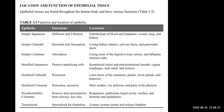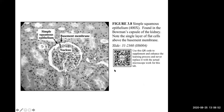Pseudo-stratified columnar — think respiratory tract: nasal cavity, trachea, anytime air comes into contact with parts of your respiratory tract. Transitional is a specialized type for distension or stretching, found in your urinary system and bladder. These are pictures of what all these epithelium types look like under a microscope. There's a QR code here if you want to scan it to enhance your learning.